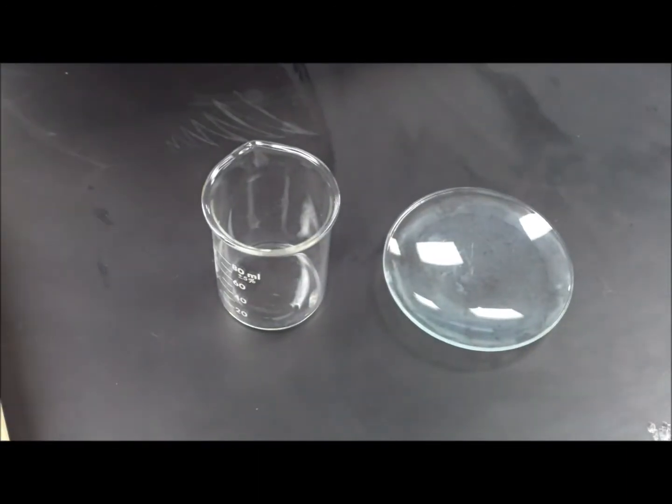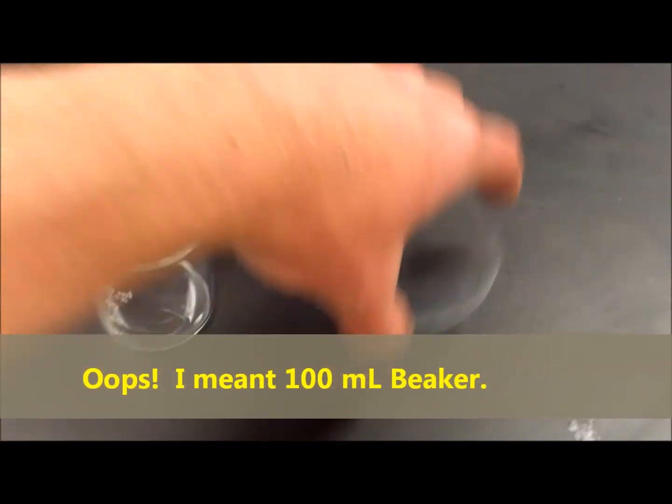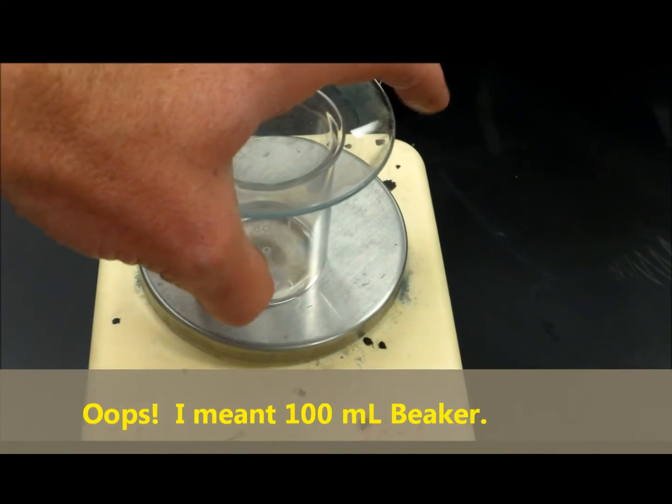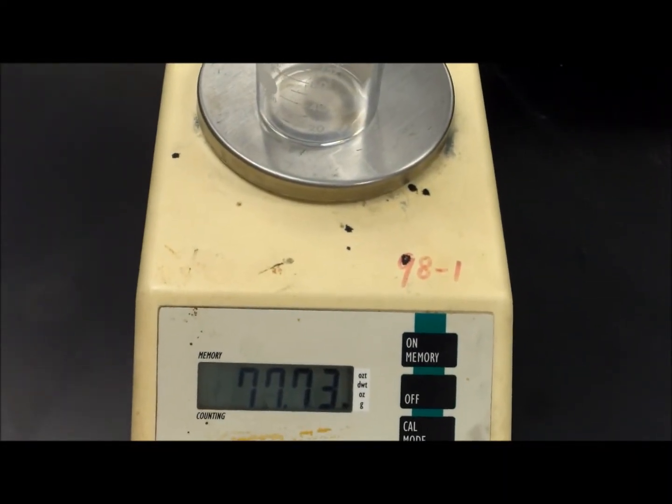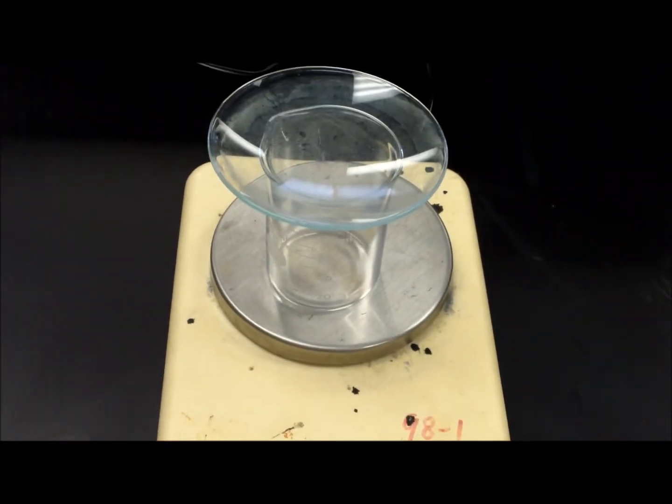Next, I'm going to measure the mass of a 100 milliliter graduated cylinder and a watch glass. I'll put those together. I'll just put those up here and measure their mass combined. Looks like we have a mass of 77.74 grams for the beaker and the watch glass.